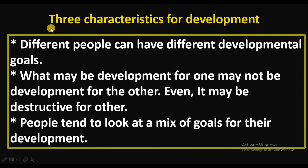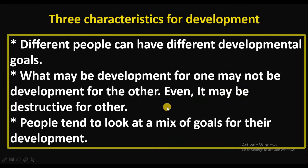There are three characteristics of development. First, different people can have different developmental goals depending on their situation, economic condition, and location. Second, what may be development for one person may not be development for another — and may even be destructive for others. Third, people tend to look for a mixed goal, meaning complete and varied development, not just one type.